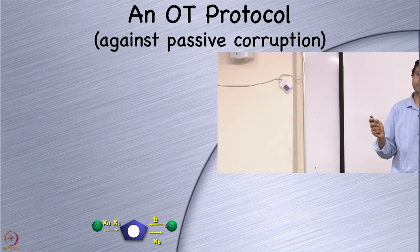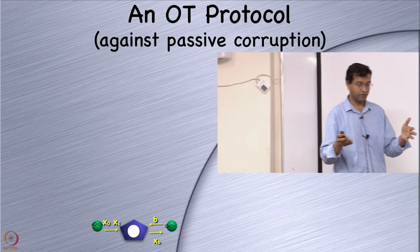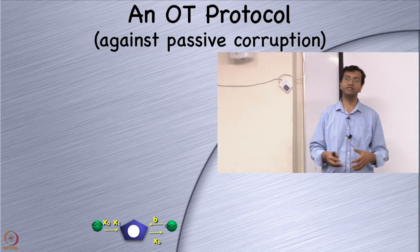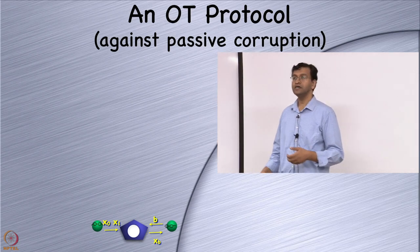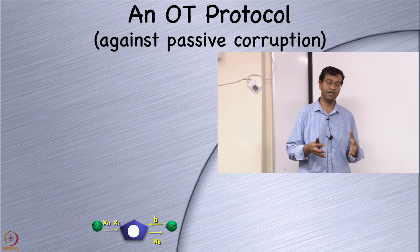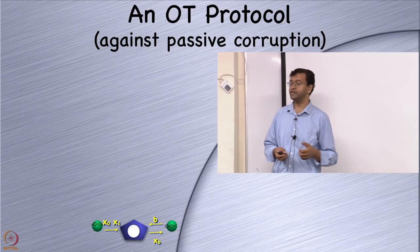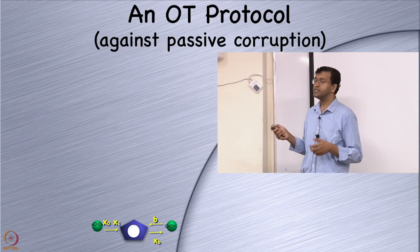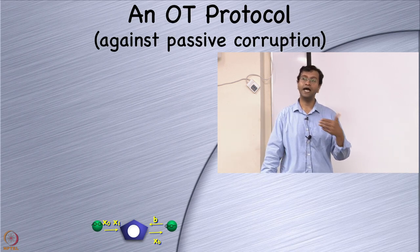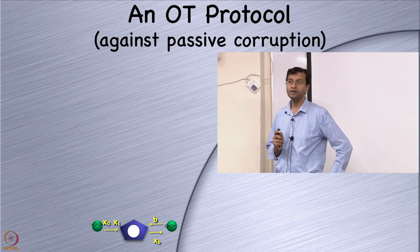Is it a realistic model? To some extent it is — sometimes the way a system is set up, you're supposed to run certain software as it is, you'll be audited, and you might use some trusted processors which make sure you're running the right program. So passive behavior can be enforced to some extent. More importantly, passive protocols that are secure against passive corruption are the first step towards building protocols that are secure against active corruption.